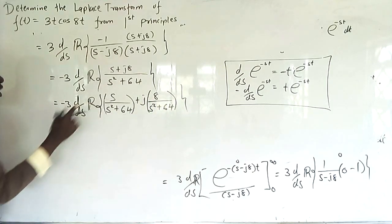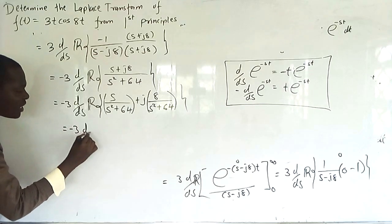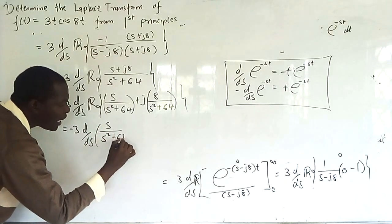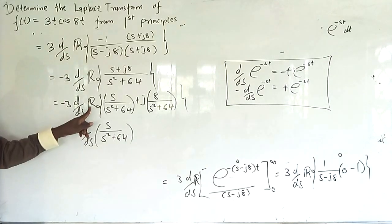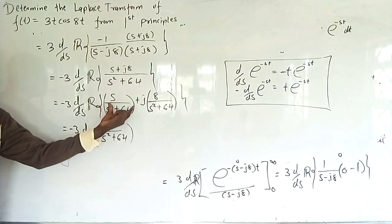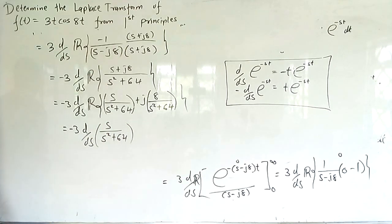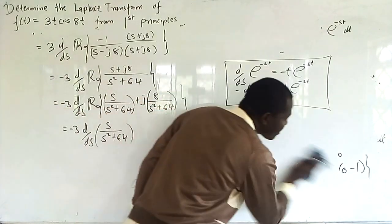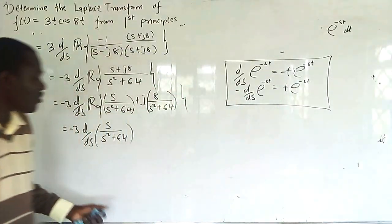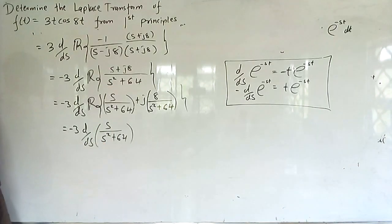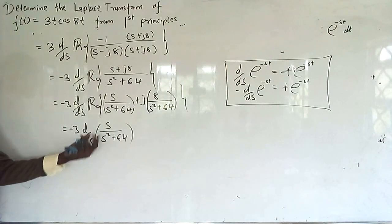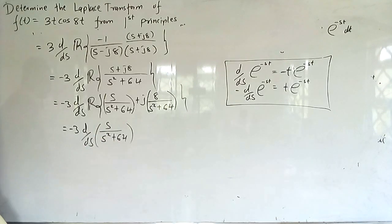So we have -3·d/ds of s/(s² + 64), because taking the real part means we pick only the real part. We have done that from first principle, and what is left is the ordinary quotient rule, differentiating s/(s² + 64) with respect to s.